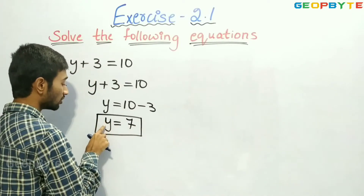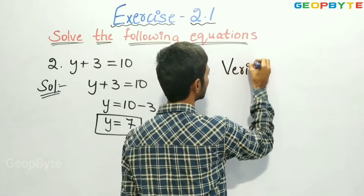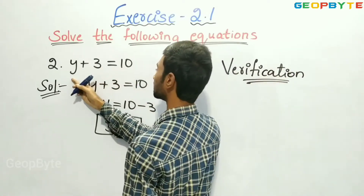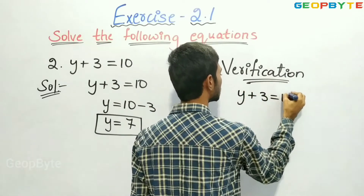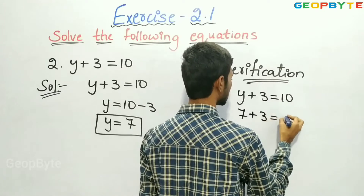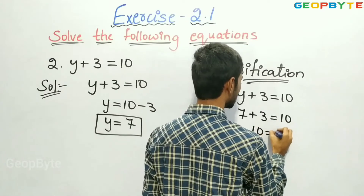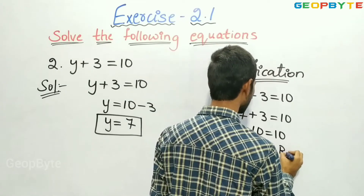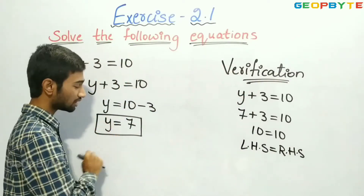So, we got the value y equal to 7. Now let us verify whether y is equal to 7 or not. Verification: the given equation is y plus 3 is equal to 10. The value of y is 7, so 7 plus 3 is equal to 10. Here, we observe that LHS is equal to RHS. So, we got the answer correct. That is, y is equal to 7.